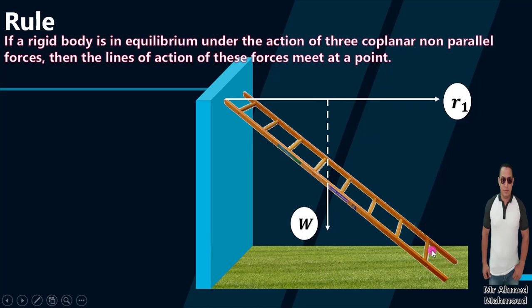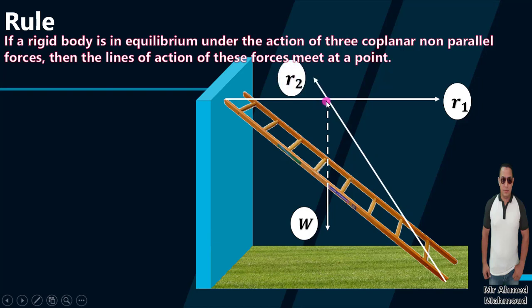The ladder presses on the floor, so the floor gives a reaction. Since the floor is rough, the direction of this reaction is unknown. The line of action of R1 is perpendicular to the wall, and the weight acts downward. These two lines meet at a point. The third force — the reaction of the rough floor — must also pass through the same point. So the three lines of action always meet at one point.